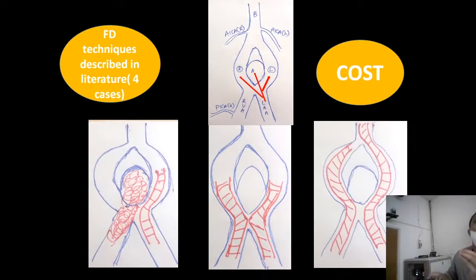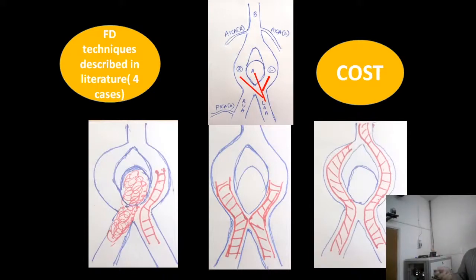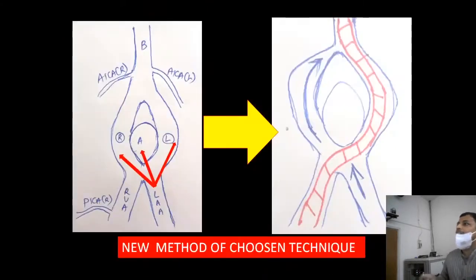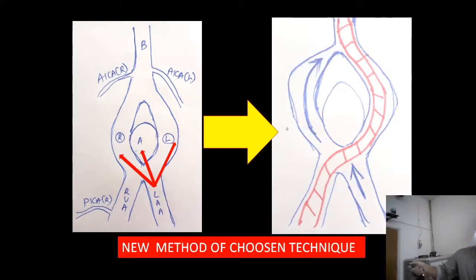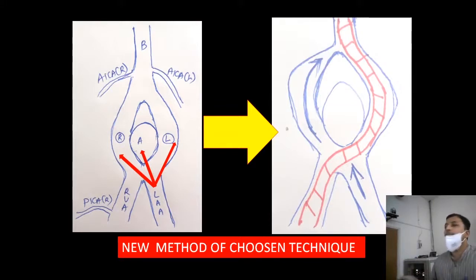We excluded the option of coiling due to mass effect. Considering the cost of using two flow diverters, we devised a novel single-flow-diverter technique — the first of its kind in the literature. Our plan was to place a single flow diverter from the right vertebral artery across the vertebrobasilar junction, through the left limb into the basilar artery. This would abolish the 3 jets from the left side, converting all 6 inflow jets into a single jet through the left limb, thereby excluding the aneurysm.